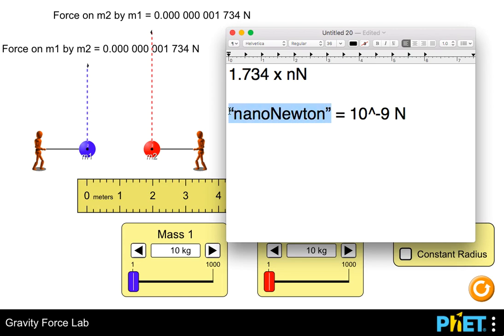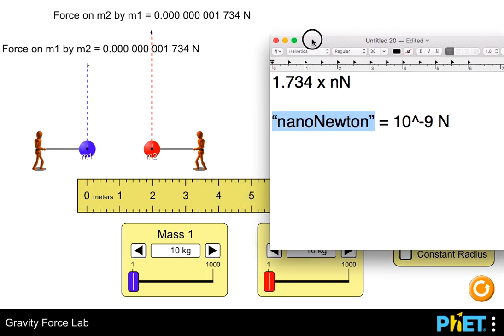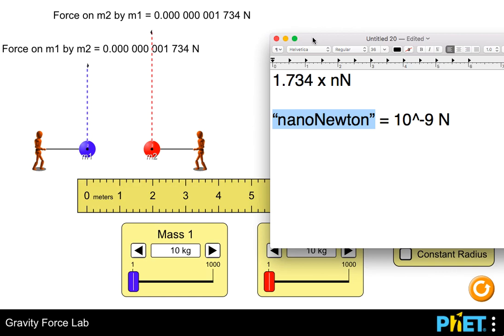So using a smaller unit will prevent you from having to use all these zeros and will give you a cleaner looking graph that's easier to analyze.